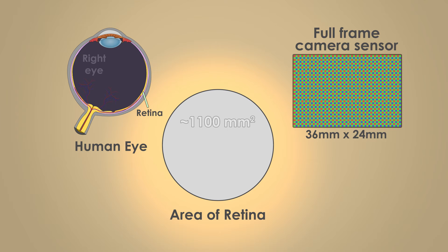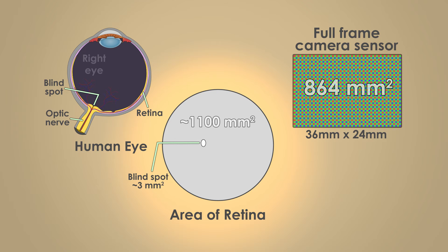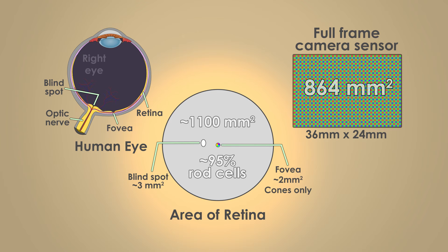The retina has an area a little larger than that of a full-frame camera sensor. It has a blind spot with no photoreceptors where the optic nerve leaves the eye. The rest of the retina is mostly dominated by rod cells, except for a small area at the center back of the eye called the fovea. This is populated exclusively by densely packed cone cells and is responsible for our highly detailed central color vision. At low light levels, however, it is like a second blind spot due to the lack of highly sensitive rod cells, and this is why dim stars disappear when looking directly at them.